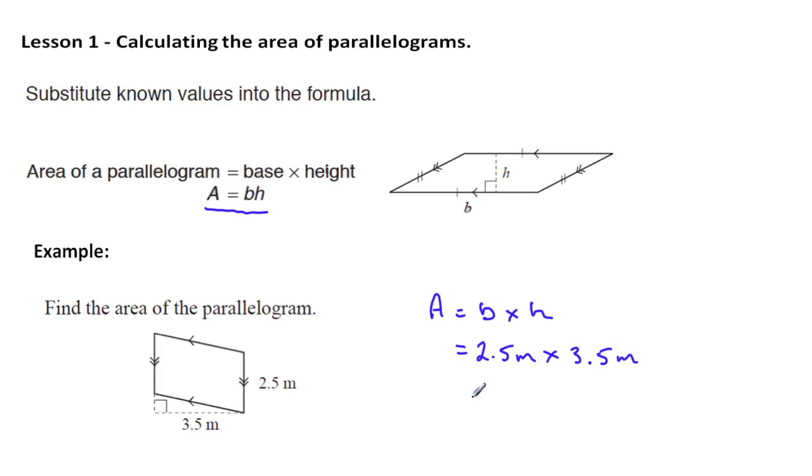Now, before we write the answer down, let's have a look and see why we selected this as the base. We could have selected this one as the base down here, this slope height, but we didn't have its measurement. So we selected a pair of opposite sides that we had the measurement length of, and we also knew what the perpendicular distance between them was.